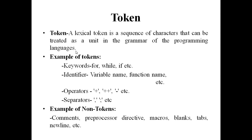Example of tokens in a program: if you take keywords, the tokens are 'for', 'while', 'if' — these are all keywords, and we will consider them as tokens. And identifiers — variable names or function names, etc. — we will also consider those as tokens.